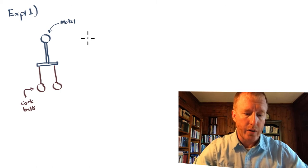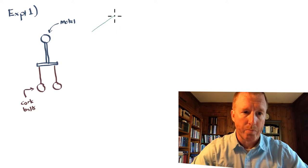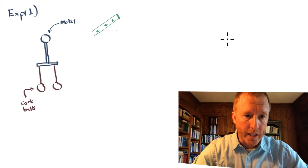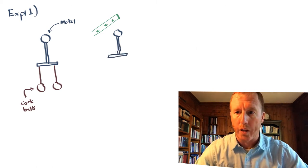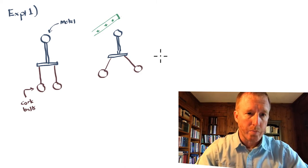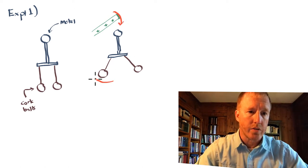What he mentions is that if you take a glass rod and charge it up by rubbing it by friction so that it becomes positively charged, and you bring it nearby this metal ball with its metal support, what will happen to these cork balls is they will repel each other. These cork balls will repel each other like this.